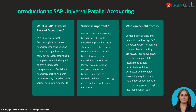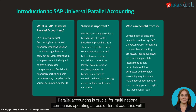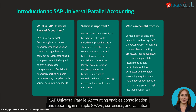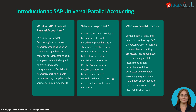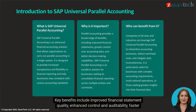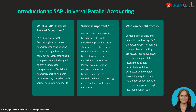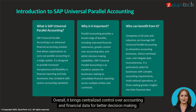Why is it important? Parallel accounting is crucial for multinational companies operating across different countries with varying compliance requirements. SAP Universal Parallel Accounting enables consolidation and reporting in multiple GAAP, currencies, and valuation methods. Key benefits include improved financial statement quality, enhanced control and auditability, faster consolidation of group reporting, and cost savings from consolidating multiple systems. Overall, it brings centralized control over accounting and financial data for better decision-making.